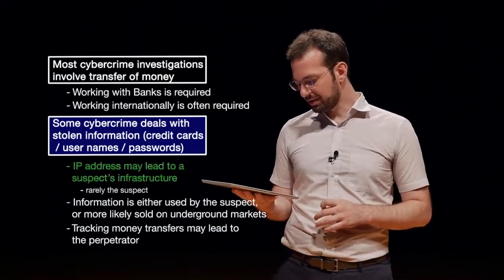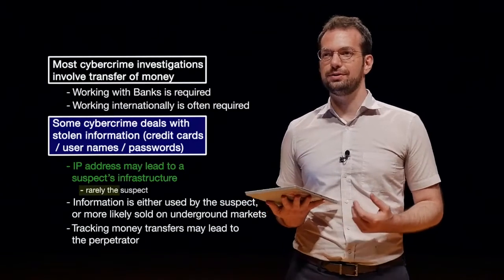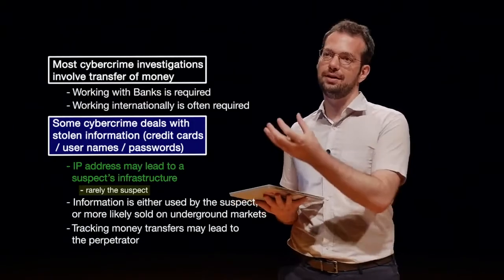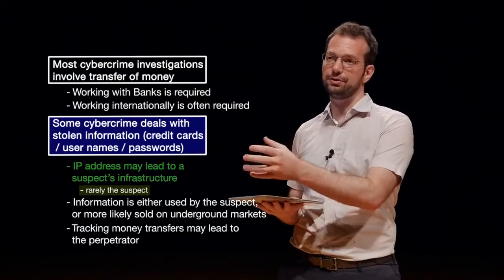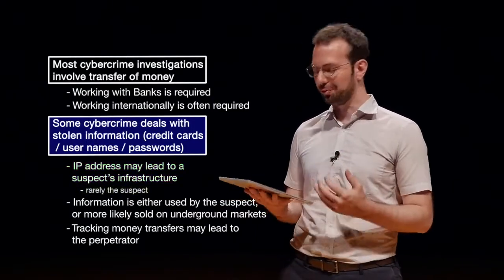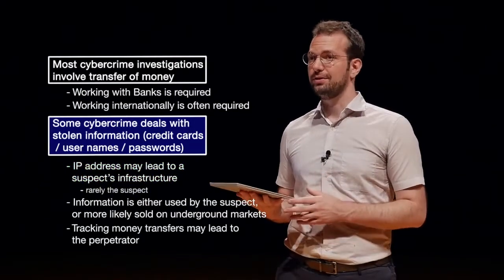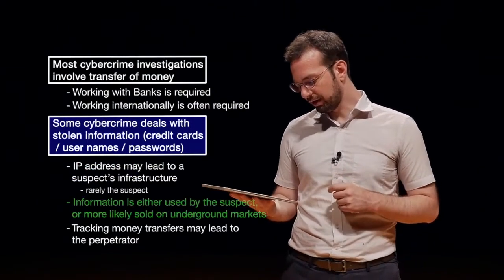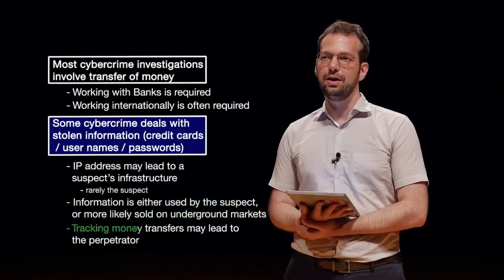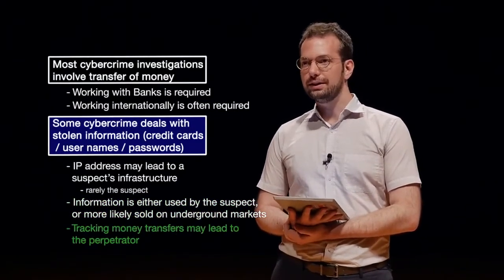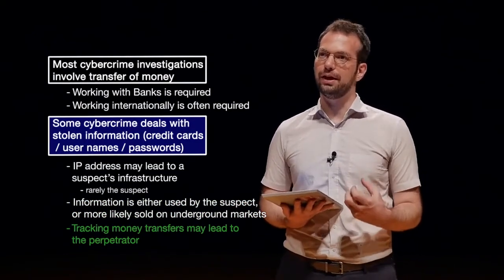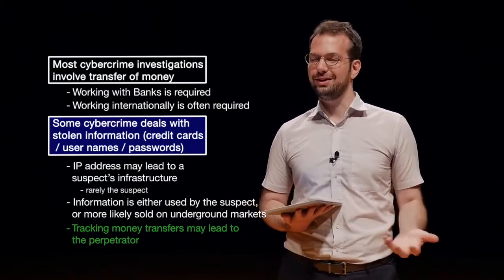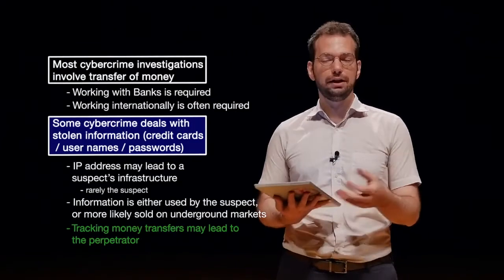IP addresses may lead to a suspect's infrastructure, but rarely to the suspect directly. Most suspects, especially skilled cybercriminals, will have infrastructure set up in multiple countries and send stolen information there rather than to their home IP address. They still have to transfer that data back to themselves, so that's normally a way to track them. Information is either used by the suspect or more likely sold on underground markets, and tracking money transfers is really one of the best ways to identify a person, since people have to get the money out of an account somehow.